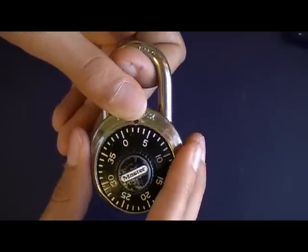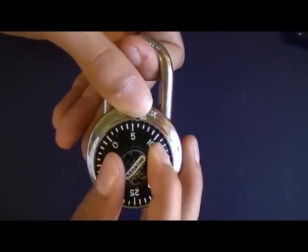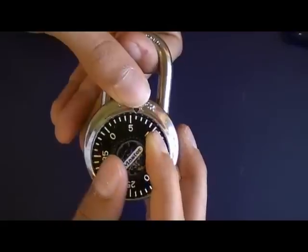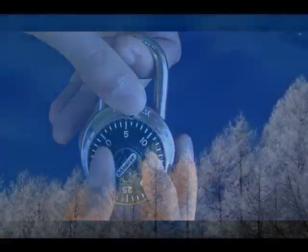So once you write that down, you want to loosen this a little, the loop thing, and turn it counterclockwise again. You'll notice it stops between 6 and 5. So you want to write down 5.5.